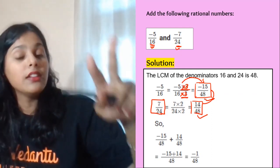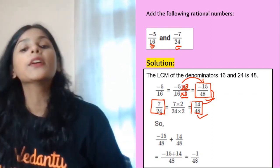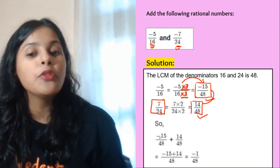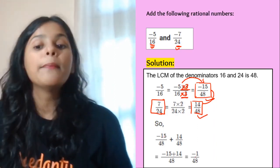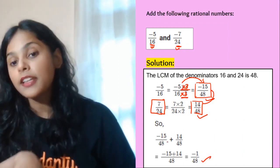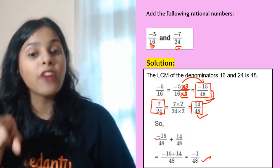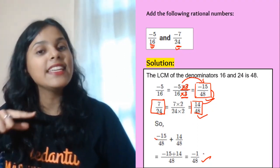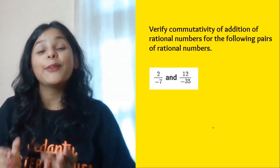Always remember: to add rational numbers, first make the denominators the same. Once the denominators are equal, just add the numerators. Minus 15 plus 14 equals minus 1 by 48. The minus sign applies because 15 is greater, so we subtract and keep the negative sign. The final answer is minus 1 by 48.